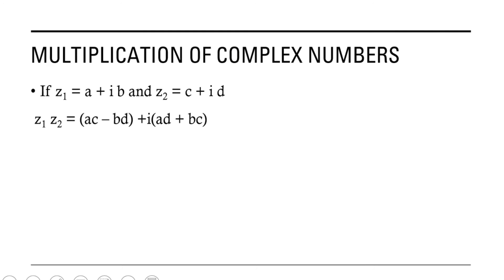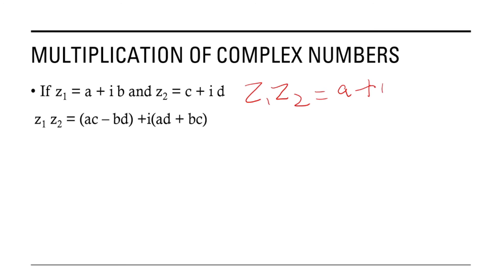Now coming to the multiplication of complex numbers. Let us consider two complex numbers z1 equal to a plus ib and z2 equal to c plus id. We can perform the ordinary multiplication: z1 into z2 equals a plus ib into c plus id.